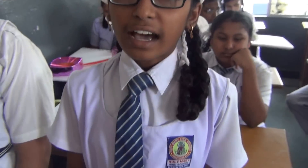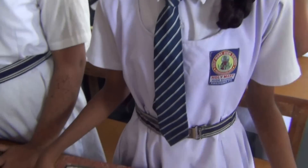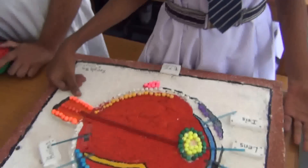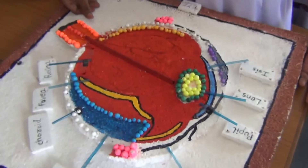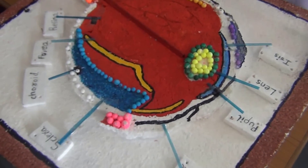The human eye consists of eyelids, eyelashes, eyebrows, and lacrimal glands.